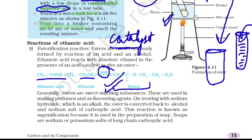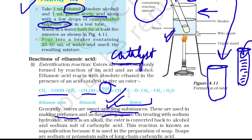Esters are sweet-smelling substances that we use in perfumes or as flavoring agents in food items. This reaction is called esterification, in which we produce an ester. Remember that this is a reversible reaction. When we react the ester with sodium hydroxide, which is an alkali, we get back the alcohol and the sodium salt of carboxylic acid. This reverse reaction is known as saponification, which is used for making soap.